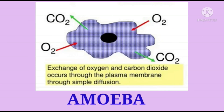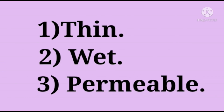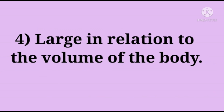In unicellular organisms such as Amoeba, exchange of oxygen and carbon dioxide occurs through the plasma membrane by simple diffusion. The properties of a respiratory surface are that it should be thin, wet, permeable, and large in relation to the volume of the body.